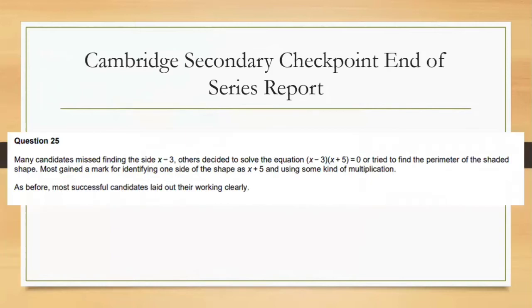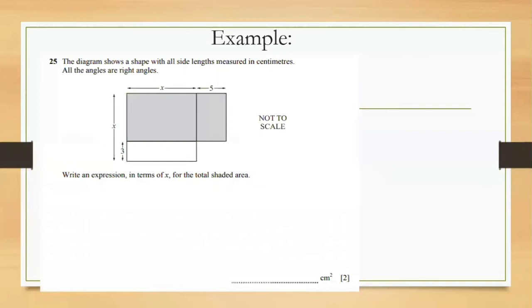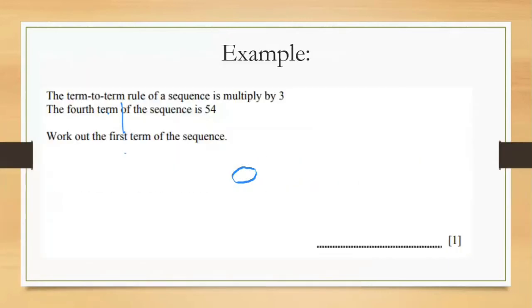From the examiner's end-of-series report: many candidates missed finding the side of (x minus 3). Others tried to solve the equation equal to zero, or tried to find the perimeter instead of area. Most candidates who succeeded laid out their working correctly. Let's move to the next example — term-to-term rule. The term-to-term rule of a sequence is multiply by 3, and the fourth term is 54. Work out the first term.